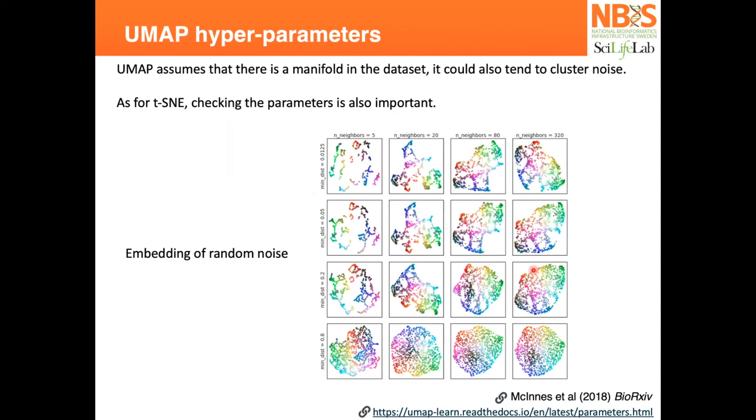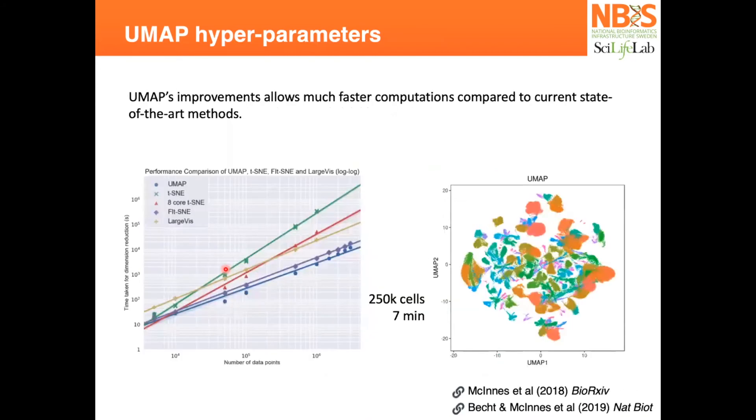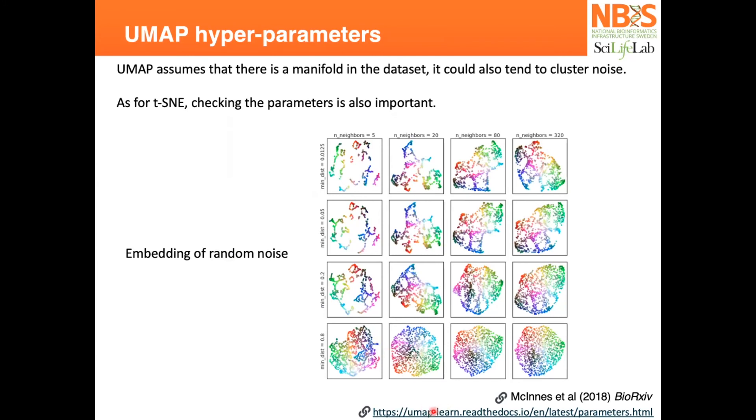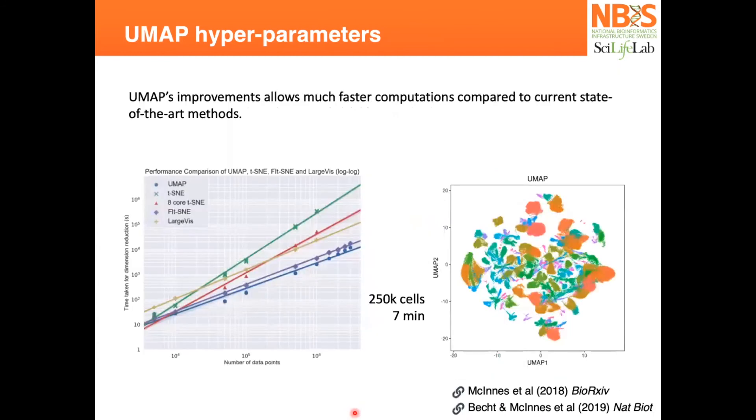Be careful with this on your dataset. There's also no right or wrong with the parameters. You need to find what works for your data and validate what you find from clustering or biological knowledge to see if that's also represented on your UMAP.